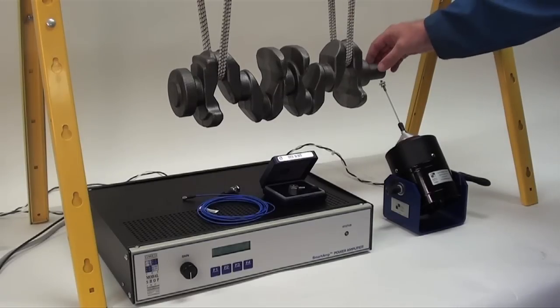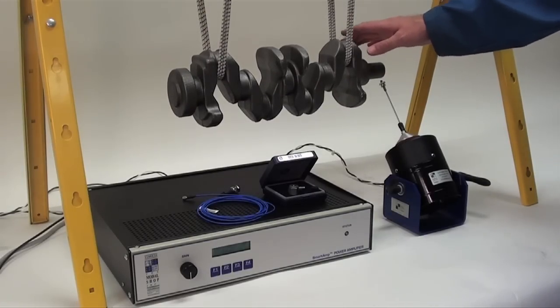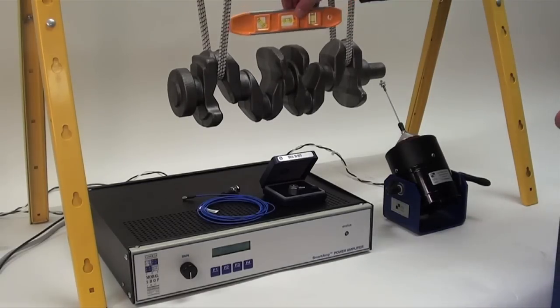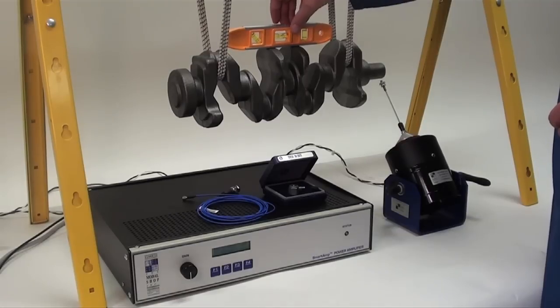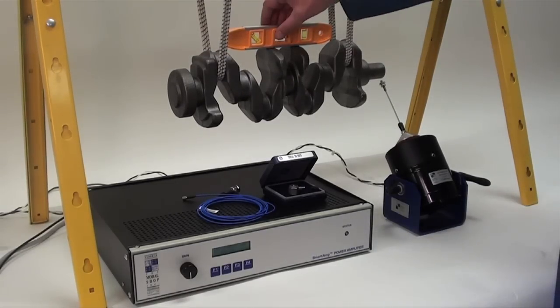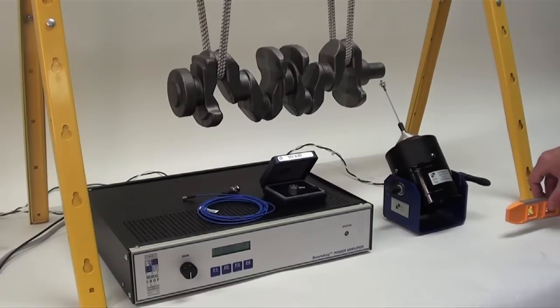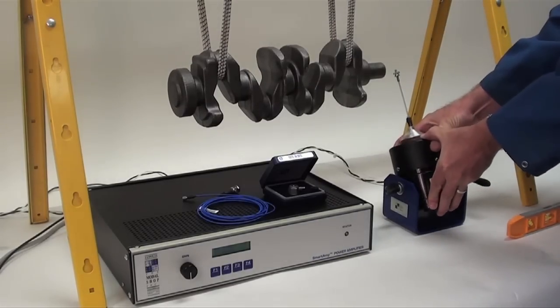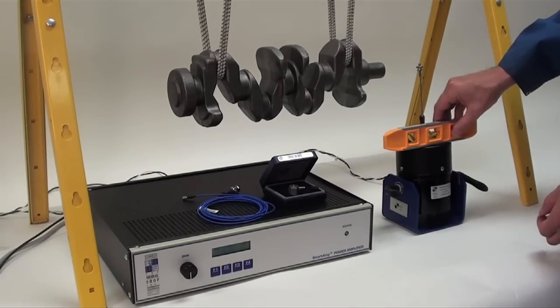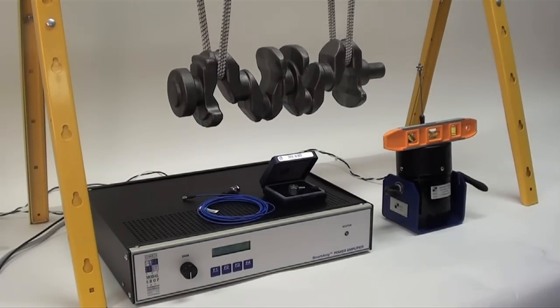In order to facilitate alignment between the test article and the shaker, it's a good idea to use a bubble level. It looks like our crankshaft is hanging level, and we want to be sure that the shaker body is also level with the test article, and it looks like we have a pretty good level.